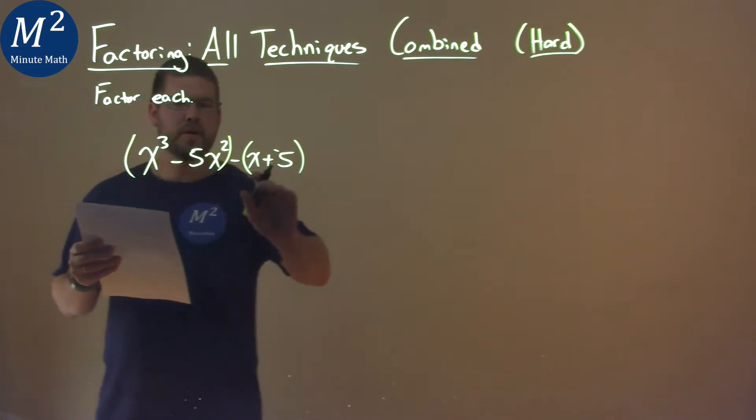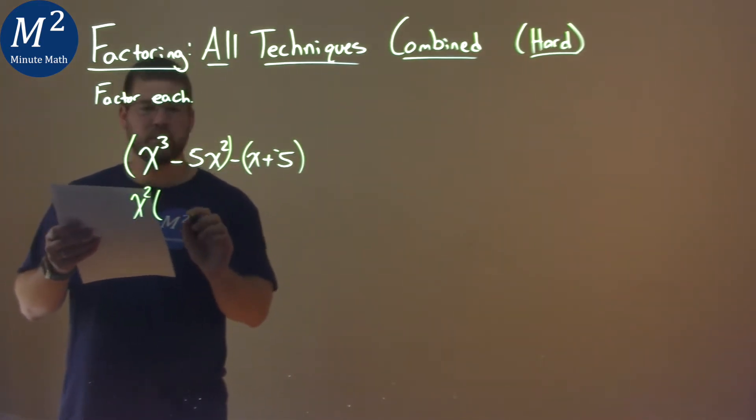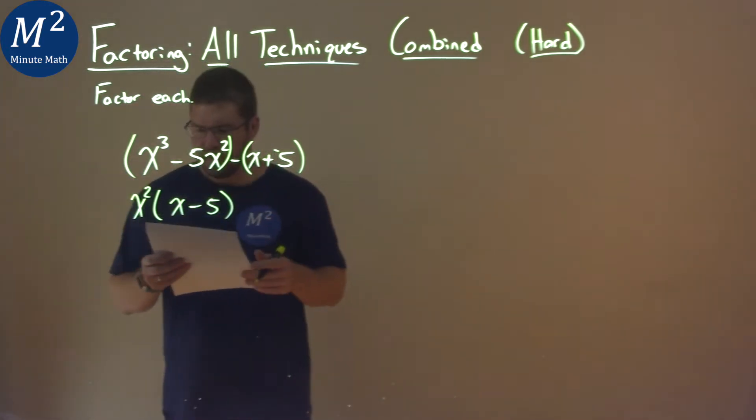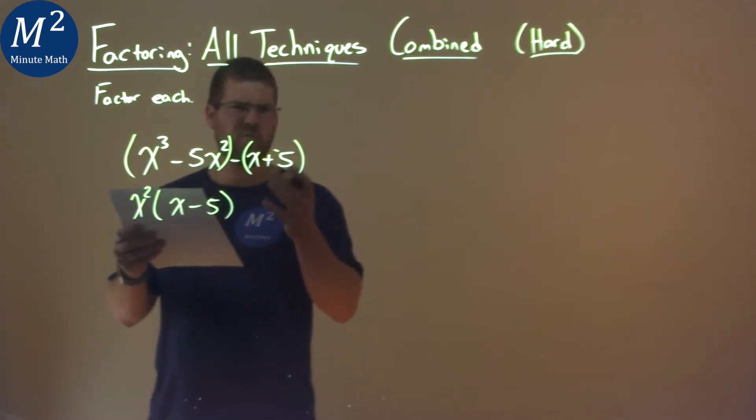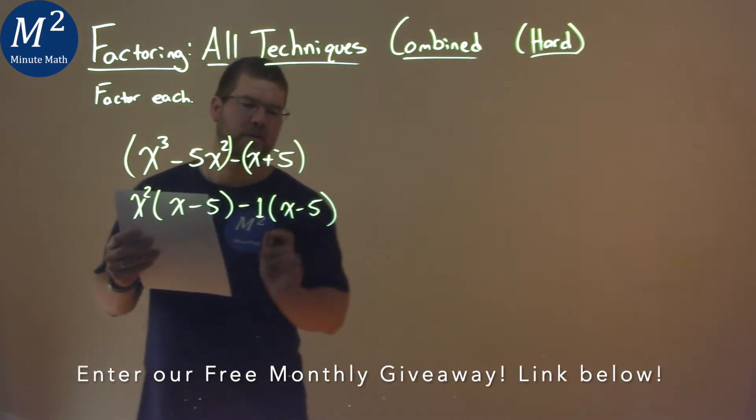Now with each group here, I see I can pull out an x squared in the first part. So I pull out an x squared, and what am I left with? Well, just an x minus 5. The second part, well, what can I pull out? Well, just a 1, right? Nothing really going on, nothing shares. So if you just pull out a 1 so we can see it visually, and we have an x minus 5 right there.